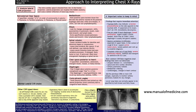The diaphragm is considered flat if the height above the AP costophrenic angle line is less than 2.7 centimetres, speaking to hyperinflation. Look at the costophrenic angle — small pleural effusions are best picked up on a lateral projection and are most commonly due to congestive heart failure.